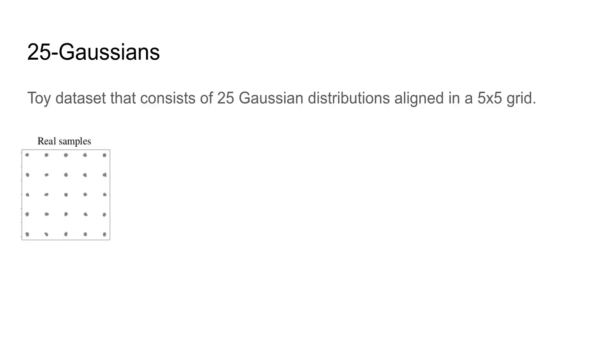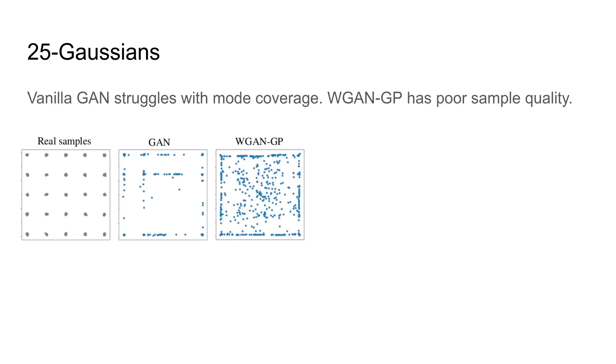In the next section we will go through the experimental results provided in the paper. First we will inspect the results on a toy data set called 25 gaussians. As the name implies, this data set consists of 25 gaussian distributions aligned in a 5 by 5 grid. GANs unfortunately perform bad on this data set. Vanilla GANs exhibit severe mode collapse issues.